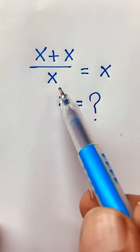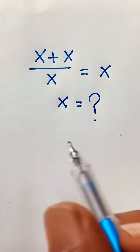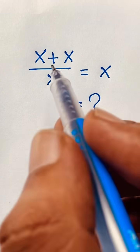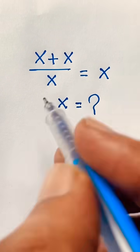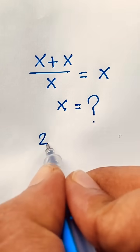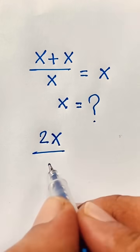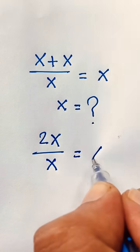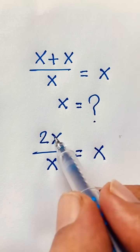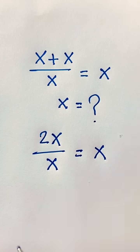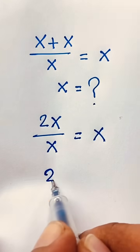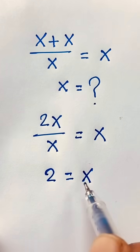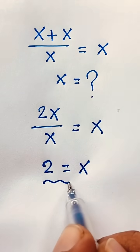x plus x over x is equal to x. How to solve this interesting math question. So x plus x will be 2x, over x is equal to x. Now this x cancels out and we find that 2 is equal to x, so our final answer is x is equal to 2.